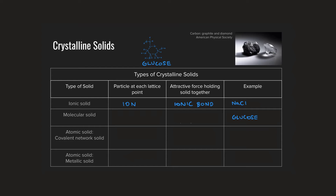Furthermore, we're also going to expect to see London dispersion forces due to the motion of those electrons. If we think about a molecular solid like glucose, rather than having an ion at each lattice point, we'd instead expect to see discrete covalently bonded molecules at each particular lattice point — a whole molecule of glucose at each point. What holds those things together are the intermolecular forces we've been recently discussing: London dispersion forces, dipole-dipole interactions, or hydrogen bonds. Those are fairly strong forces of attraction between those molecules, recognizing the strength of hydrogen bonding due to all those hydroxyl groups.